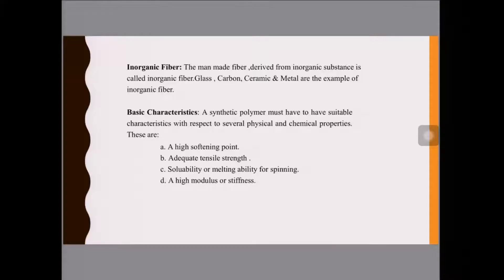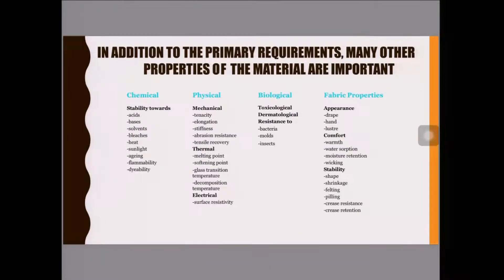Inorganic fibers are man-made fibers derived from inorganic substances like glass, carbon, ceramic, and metal. The basic characteristics required for a polymer to become a fiber include a high softening point, adequate tensile strength, solubility, and high modulus and stiffness. In addition to these primary requirements, other properties are needed, including physical properties, chemical properties, biological properties, and fabric properties.